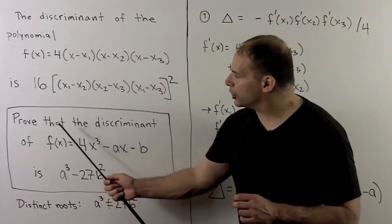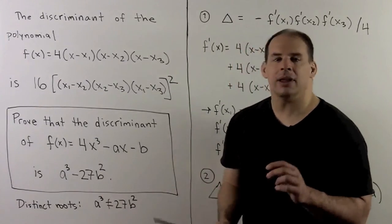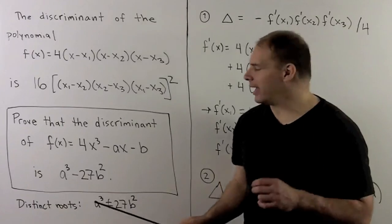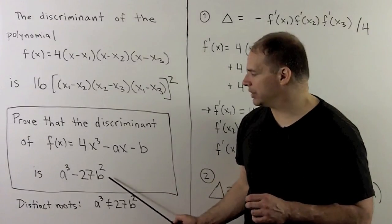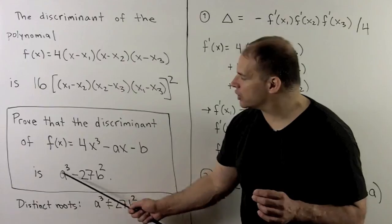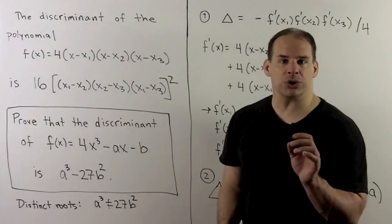We want to show, if I have a cubic of this form, that its discriminant is given by a³ - 27b². This is the expression we check to see whether the roots are distinct or not.